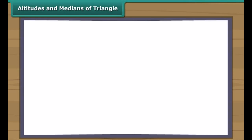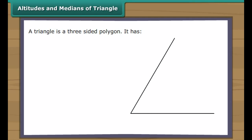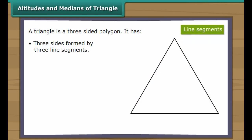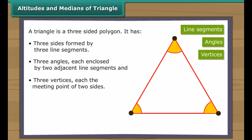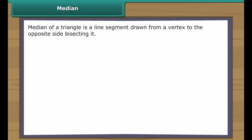Altitudes and medians of a triangle. A triangle is a three-sided polygon. It has three sides formed by three line segments, three angles each enclosed by two adjacent line segments, and three vertices each being the meeting point of two sides. A triangle also has medians and altitudes. A median of a triangle is a line segment drawn from a vertex to the opposite side, bisecting it.